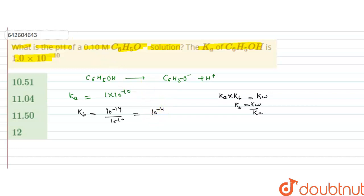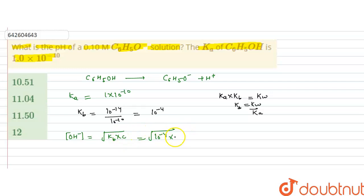Now we will calculate the concentration of hydroxide ions. The hydroxide ion concentration equals √(Kb × C). Kb is 10⁻⁴ and concentration C is 0.1 molar, so [OH⁻] = √(10⁻⁴ × 0.1) = 3.1×10⁻³ M.